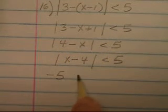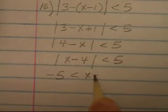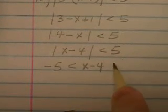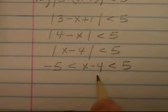And then from here we can write the AND statement. Negative 5 is less than x minus 4, which is less than 5. Let's add 4 everywhere.